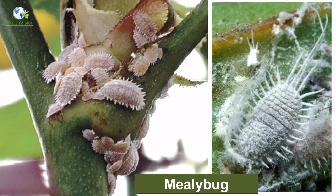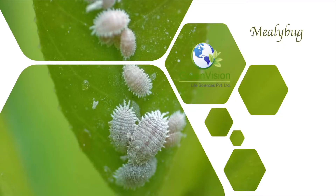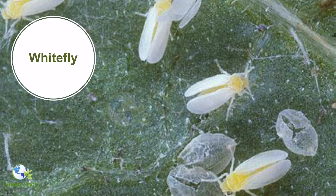This is mealybug. Mealybug is again difficult to control because it has a cottony layer and cottony powder on its body, and its eggs are hidden beneath this cottony powder. That is why it is very difficult to reach the insect body or eggs with insecticide. They protect themselves from insecticides as well as natural enemies using this white powder. Here you can see nymphs and adults feeding on the plant.